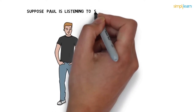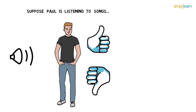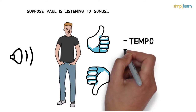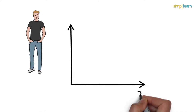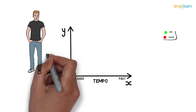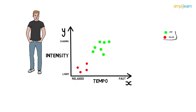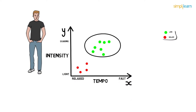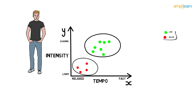Paul loves listening to new songs. He either likes them or dislikes them, based on the song's tempo, genre, intensity, and the gender of voice. For simplicity, let's use tempo and intensity. Tempo is on the x-axis ranging from relaxed to fast, and intensity is on the y-axis ranging from light to soaring. Paul likes songs with fast tempo and soaring intensity, while he dislikes songs with relaxed tempo and light intensity.